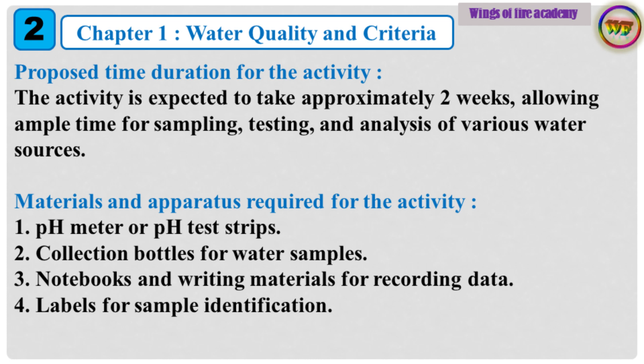Proposed Time Duration for the Activity: The activity is expected to take approximately 2 weeks, allowing ample time for sampling, testing, and analysis of various water sources. Materials and Apparatus Required: 1. pH Meter or pH Test Strips, 2. Collection Bottles for Water Samples, 3. Notebooks and Writing Materials for Recording Data, 4. Labels for Sample Identification.